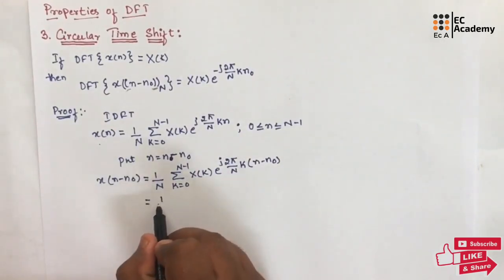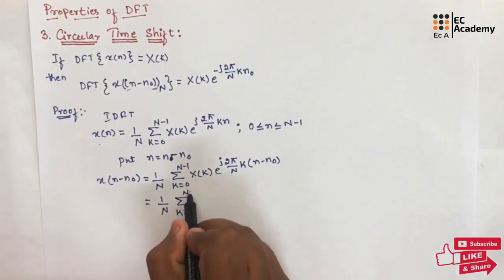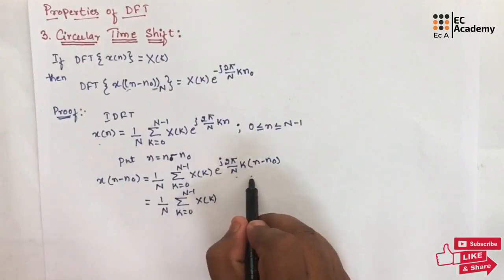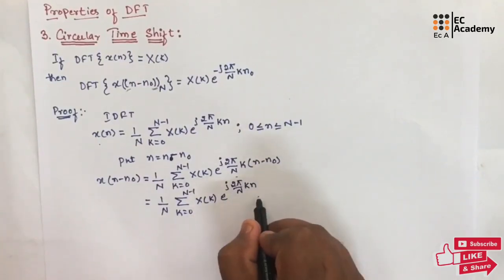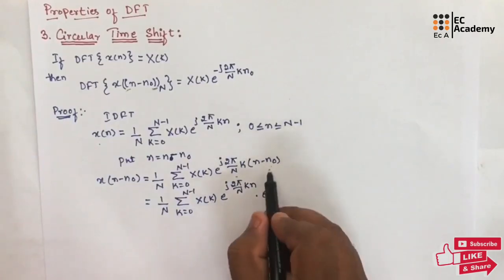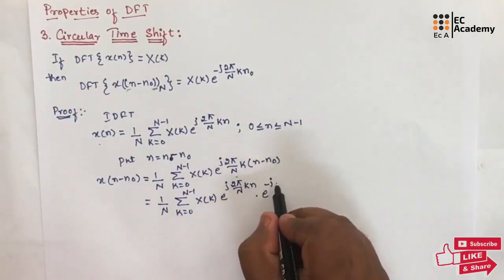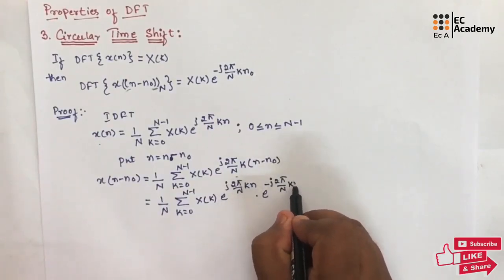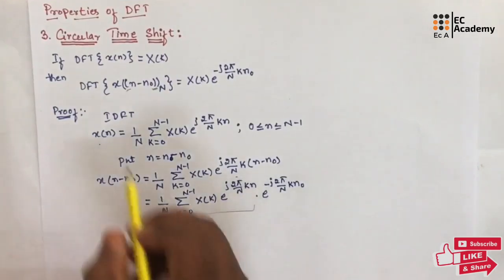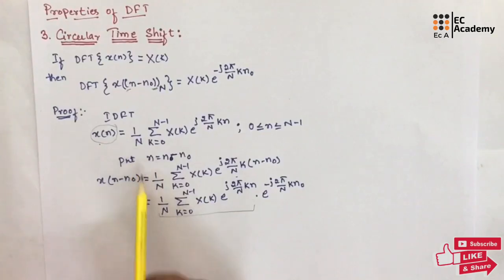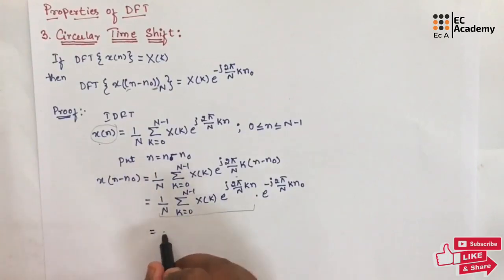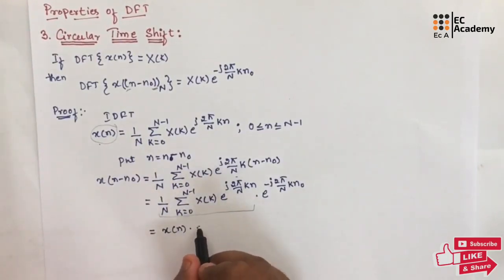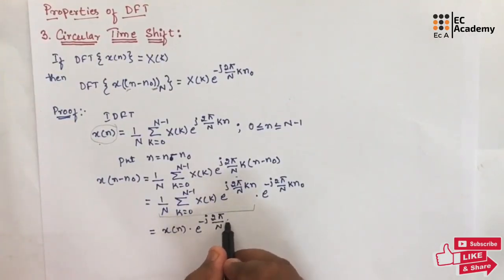Now, we can write the above equation as 1 by N, summation of K is equal to 0 to N minus 1, X of K. We can split the exponential term: e to the power of j 2 pi by N K N, into e to the power of minus j 2 pi by N into K N naught. We know this term is nothing but X of N, that is equal to 1 by N, summation of K is equal to 0 to N minus 1, X of K, e to the power of j 2 pi by N into K N. So we will replace that term with X of N, multiplied by e to the power of minus j 2 pi by N into K N naught.